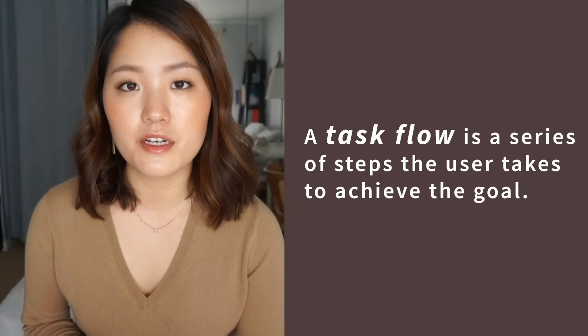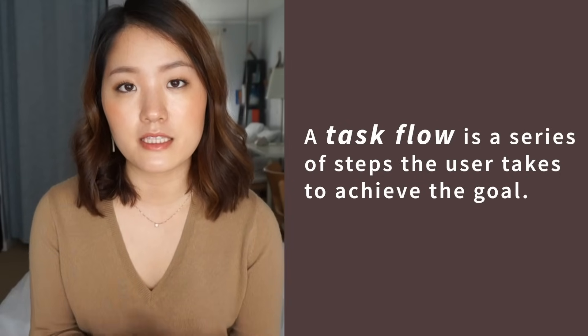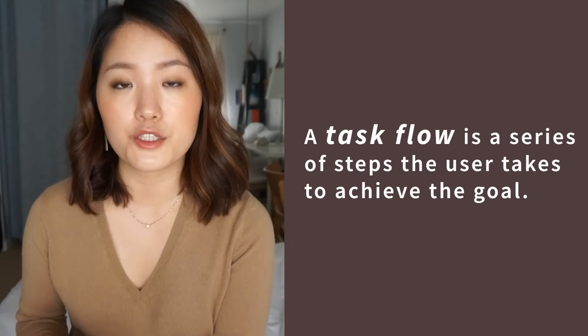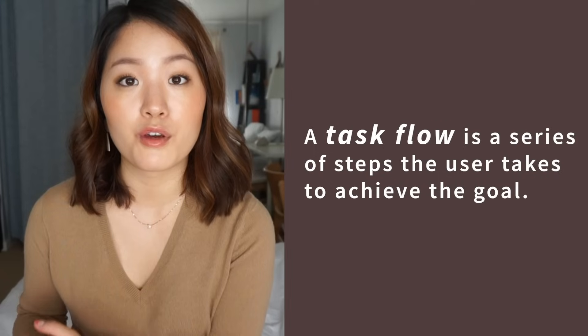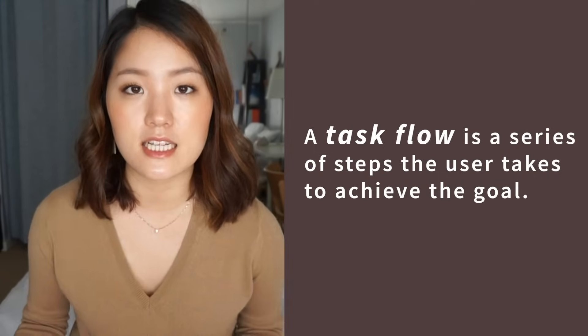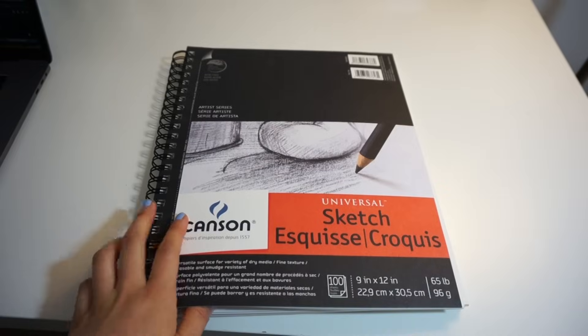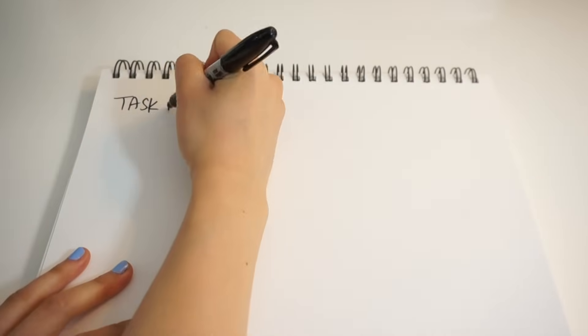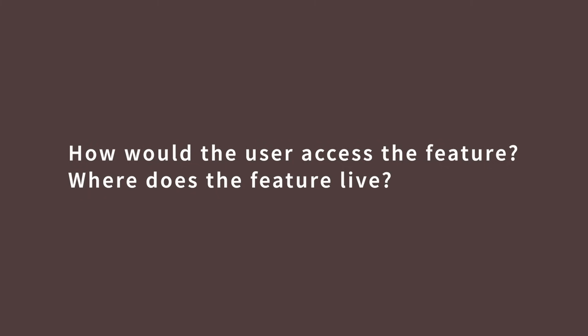Now that we've defined the user and their goal, let's move on to the task flow. A task flow is the series of steps that the user has to take to achieve the goal of cashing out instantly. First, I start with paper and pen and start writing down high-level steps of a user trying to use the instant payment feature. I'd ask myself where the user would be able to access this feature — where would they start?